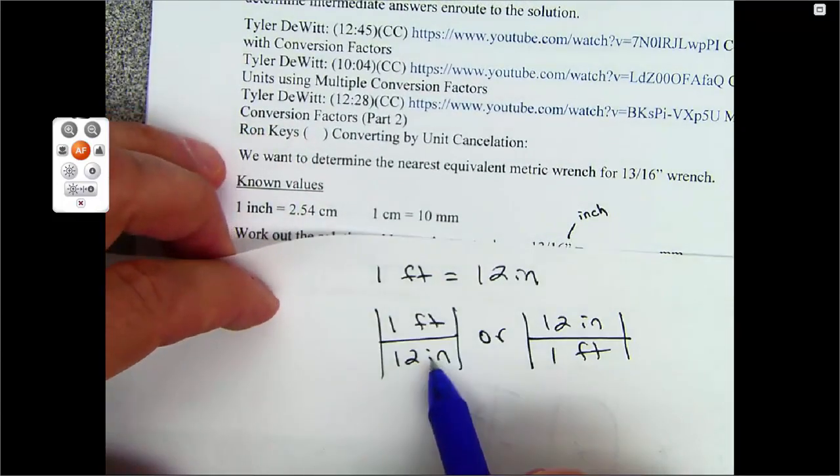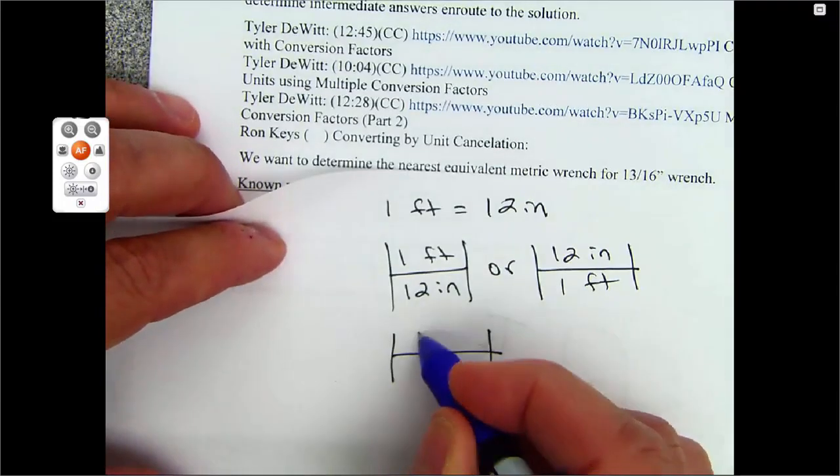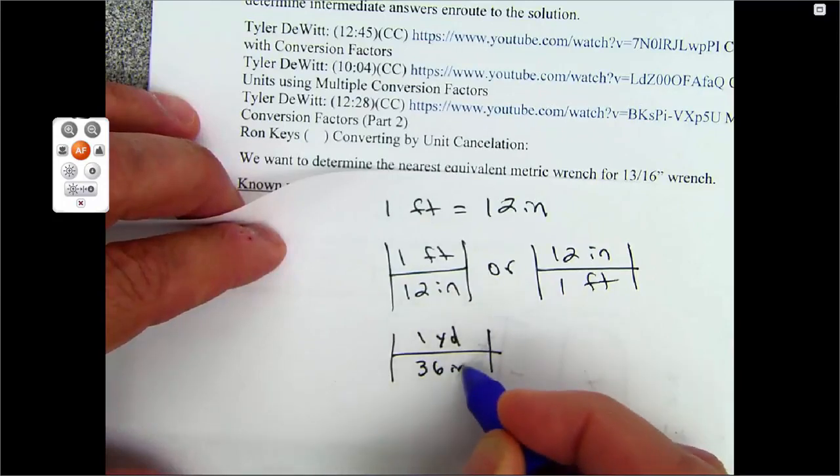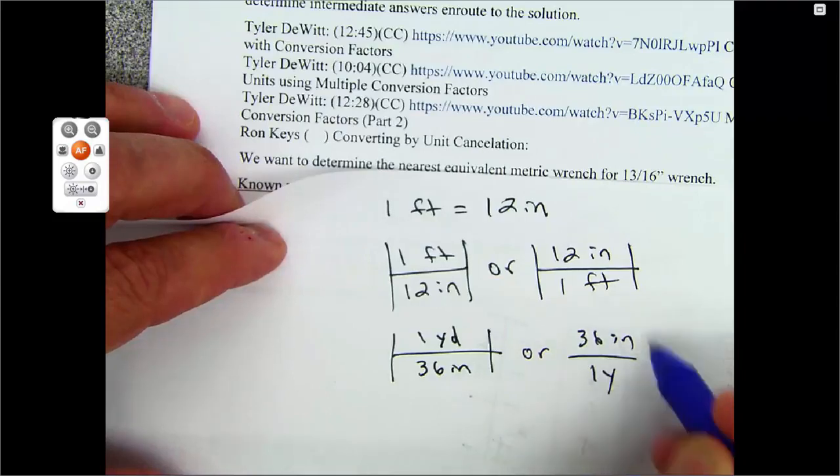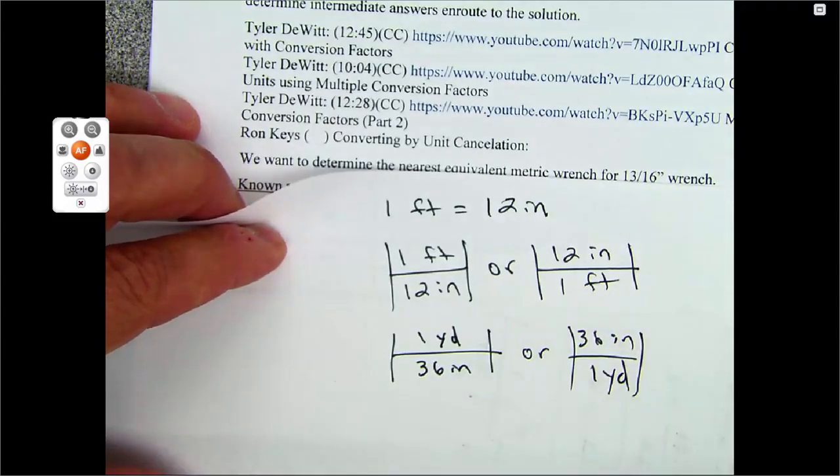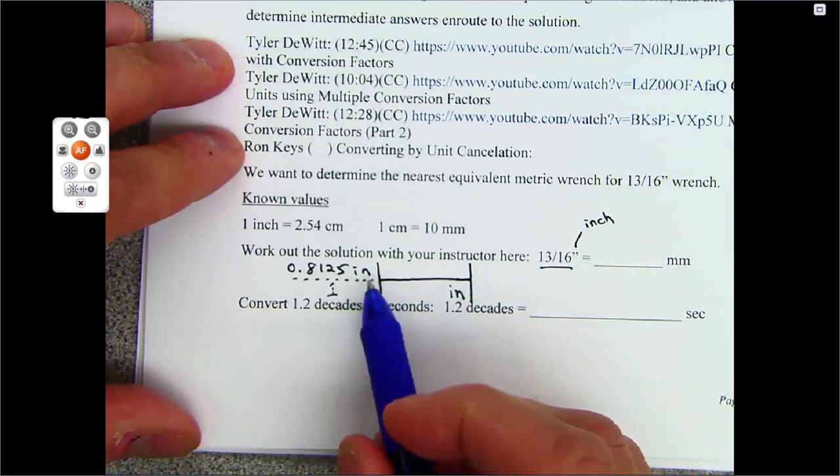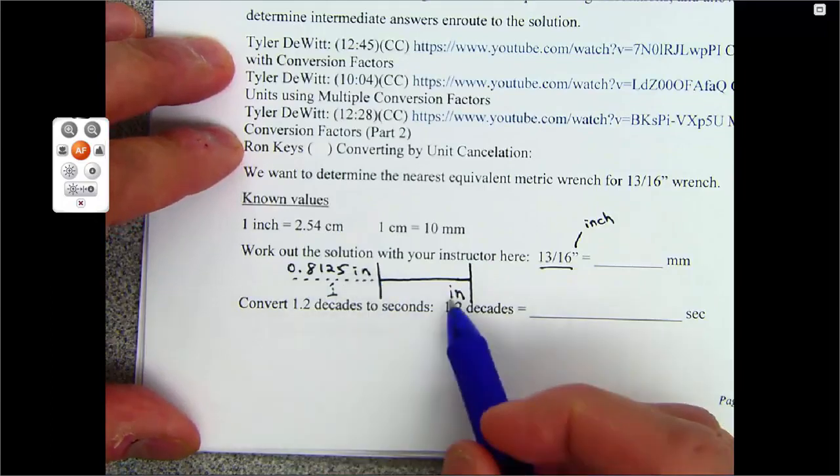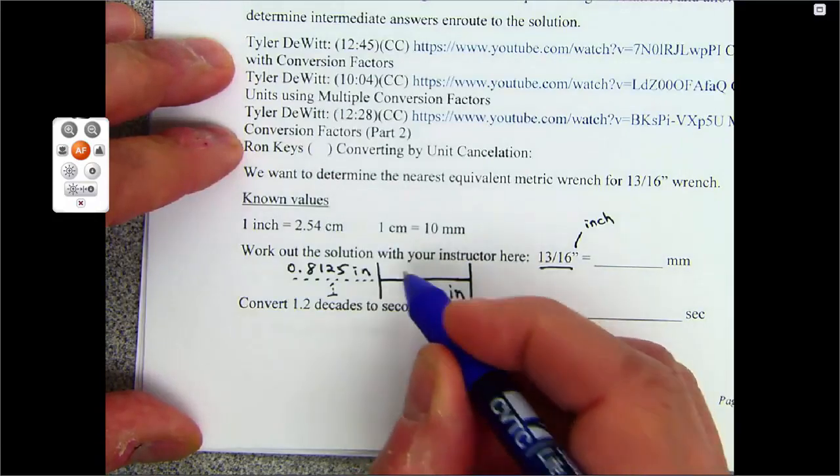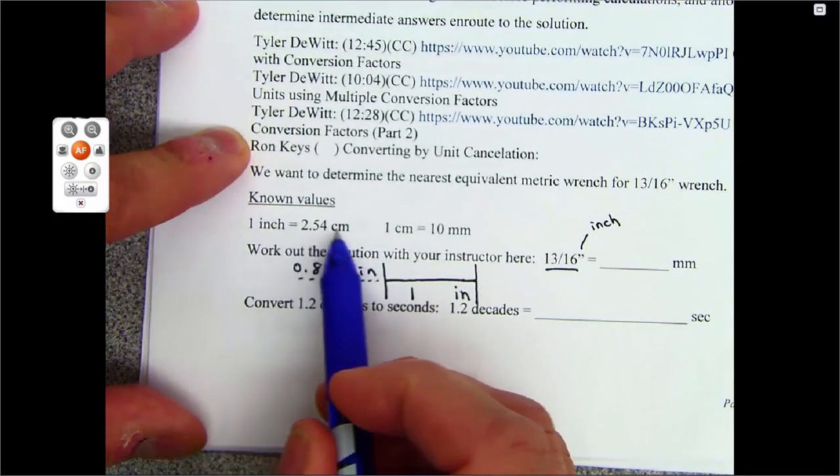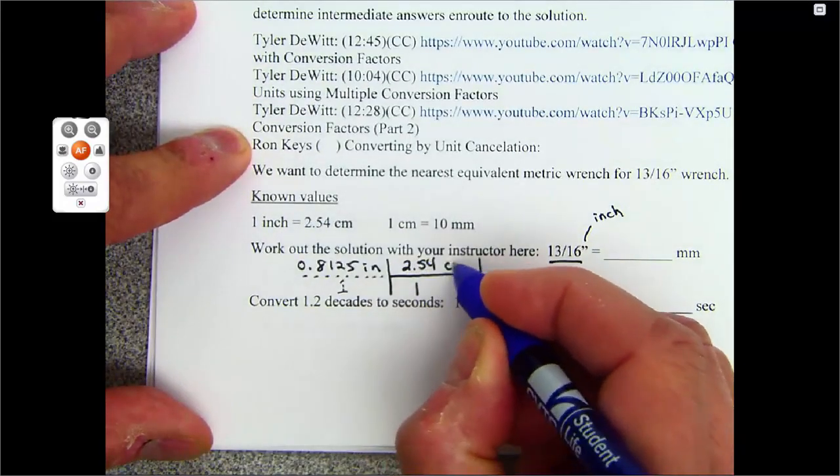As long as we put in here a true mathematical relationship. True mathematical statement goes in here. But what you want to do is make sure whatever unit you start out with here, you have to put that unit down below to cancel it. I'm going to go one inch and I'm using this one, 2.54 centimeters.